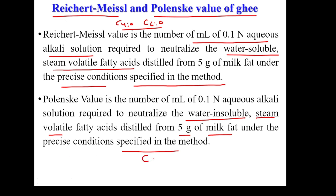The two fatty acids which contribute to the Polenske value are C8:0 (caprylic acid) and C10:0 (capric acid). So to clarify: C4 is butyric acid and C6 is caproic acid.